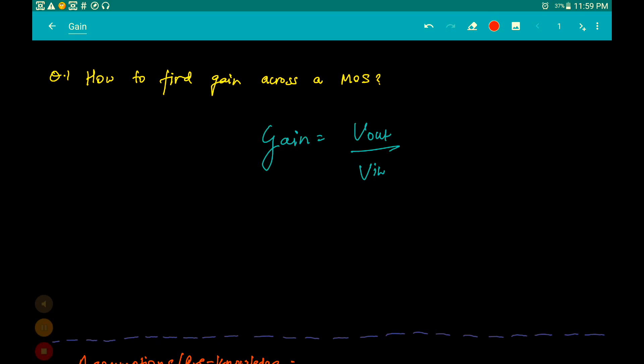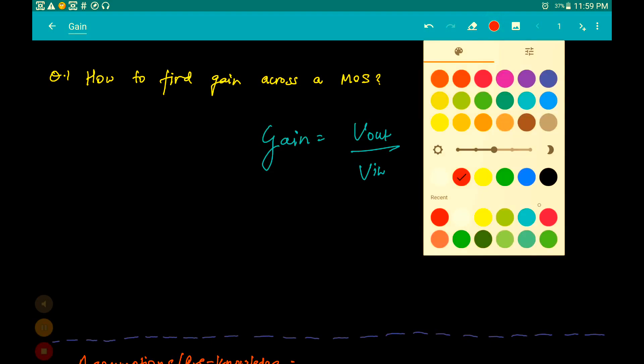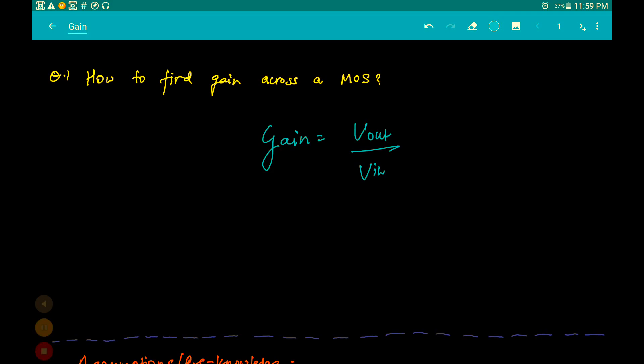We are supposed to find what is the gain across a MOS. In order to find gain, we must define it. Gain is defined as Vout by Vin, where Vout is the voltage sensed at the output terminal and Vin is the voltage applied to the input terminal. If Vout is equal to 0.5 volts and Vin is equal to 5 volts, then gain will be 0.1.